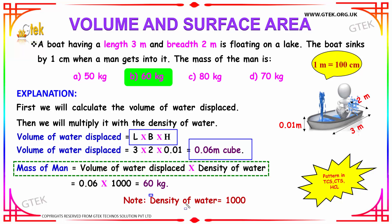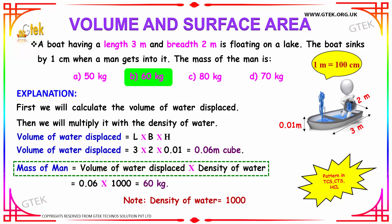As we know, the density of water is 1000. Multiply the volume of the water displaced with the density of the water and you will get the answer to be 60. So 60 is our answer — the weight of the man will be 60 kg.